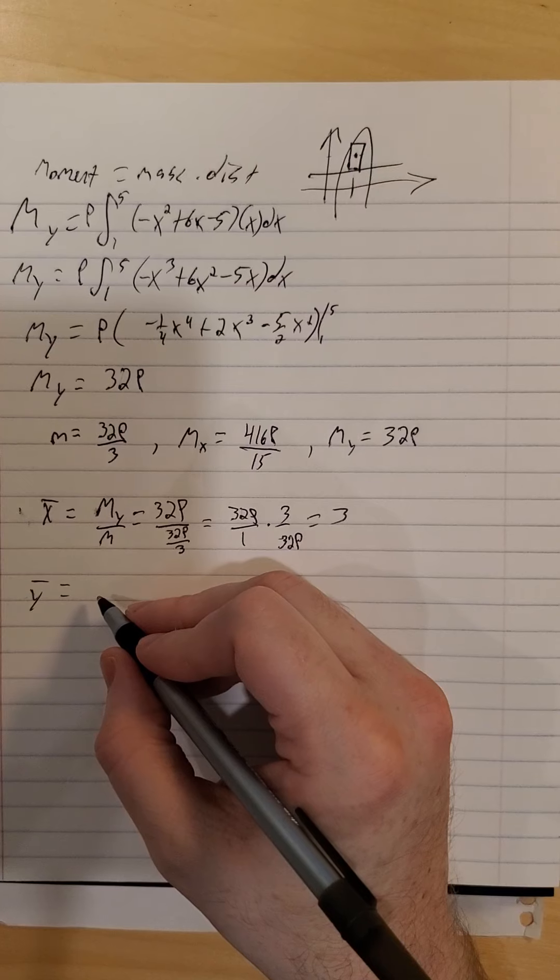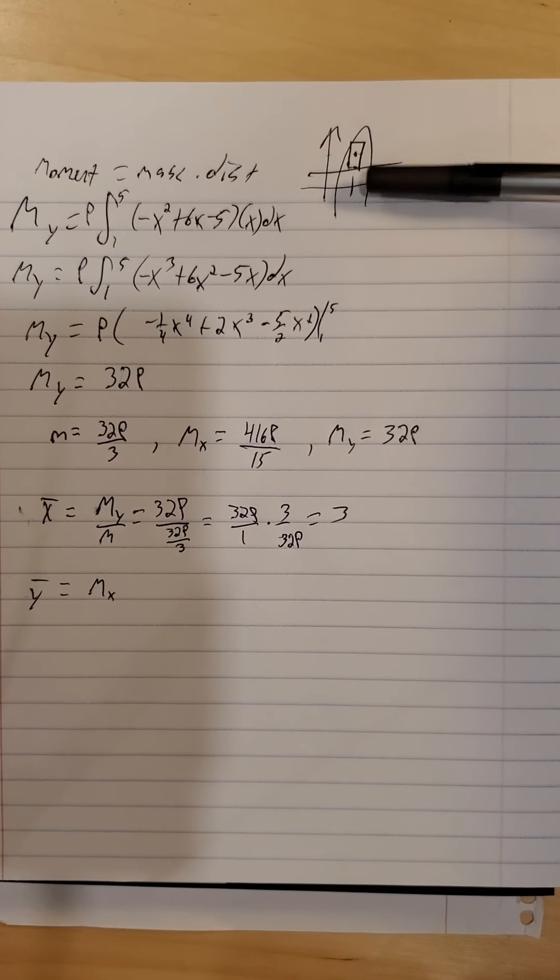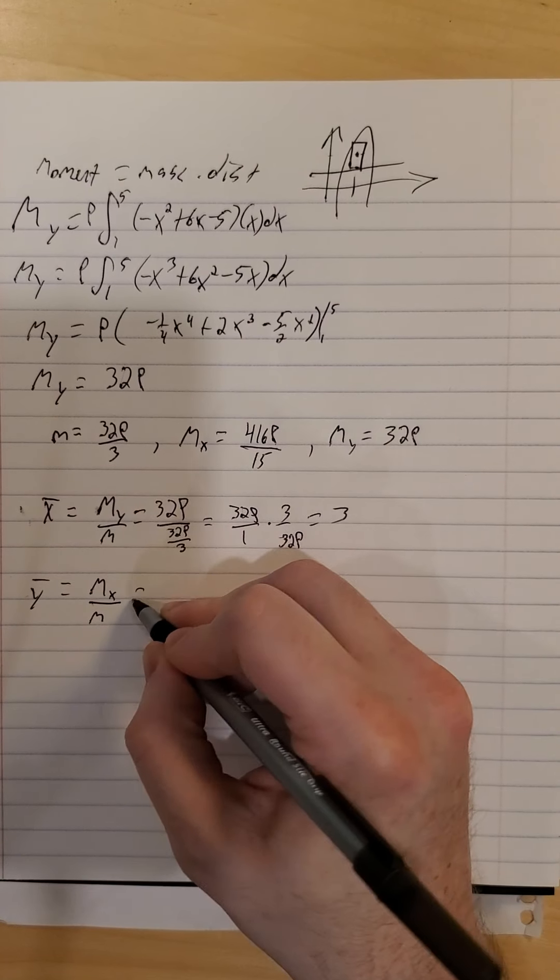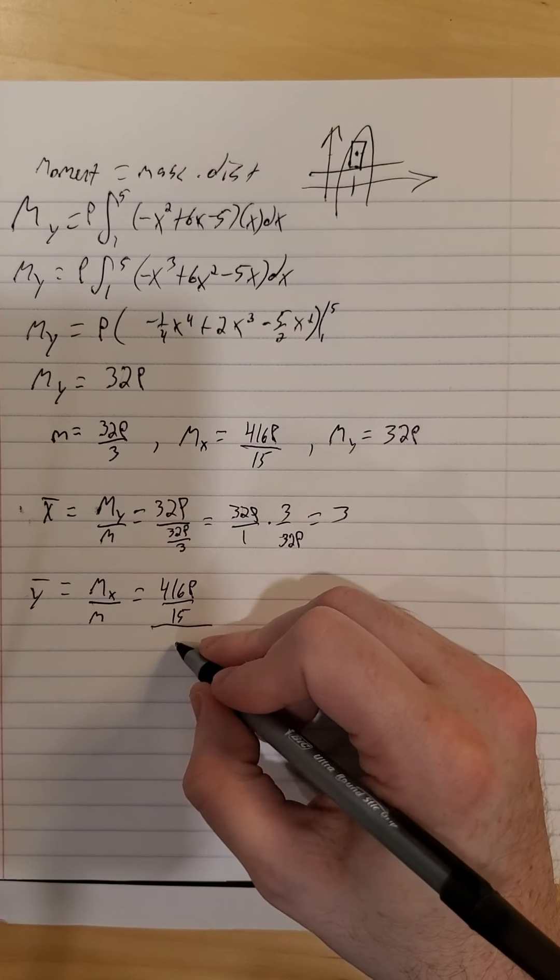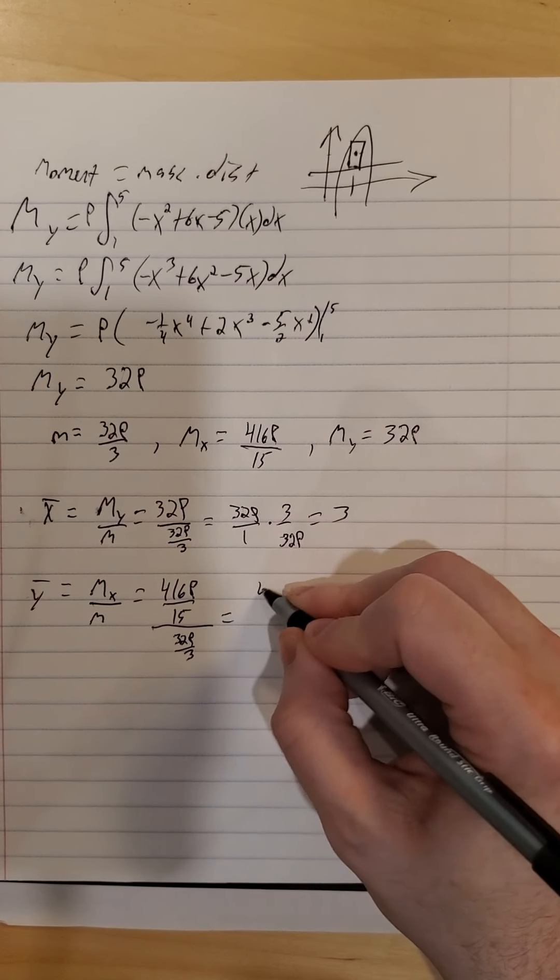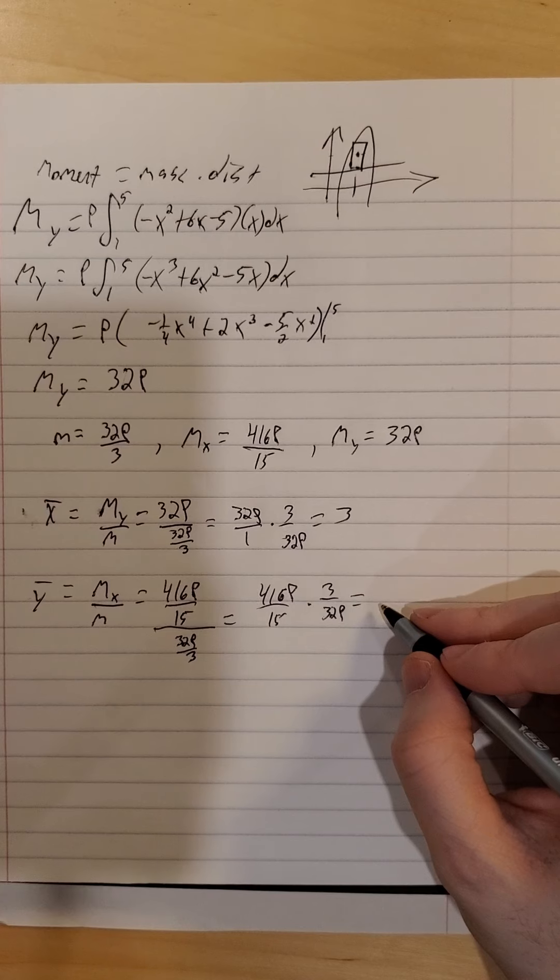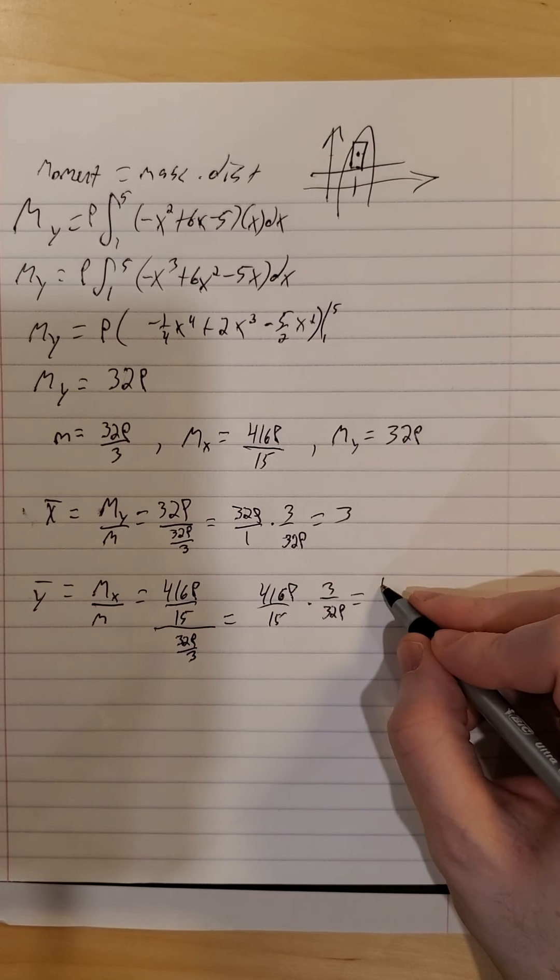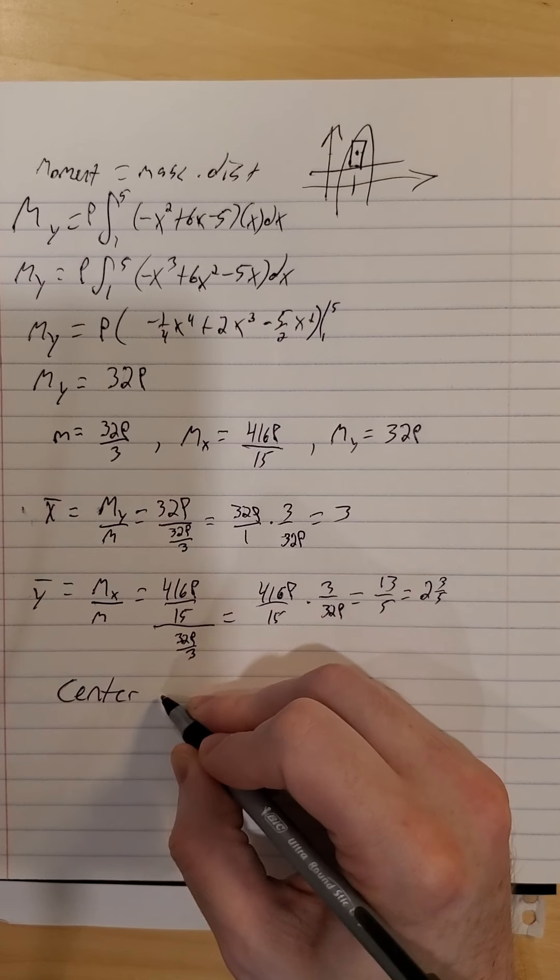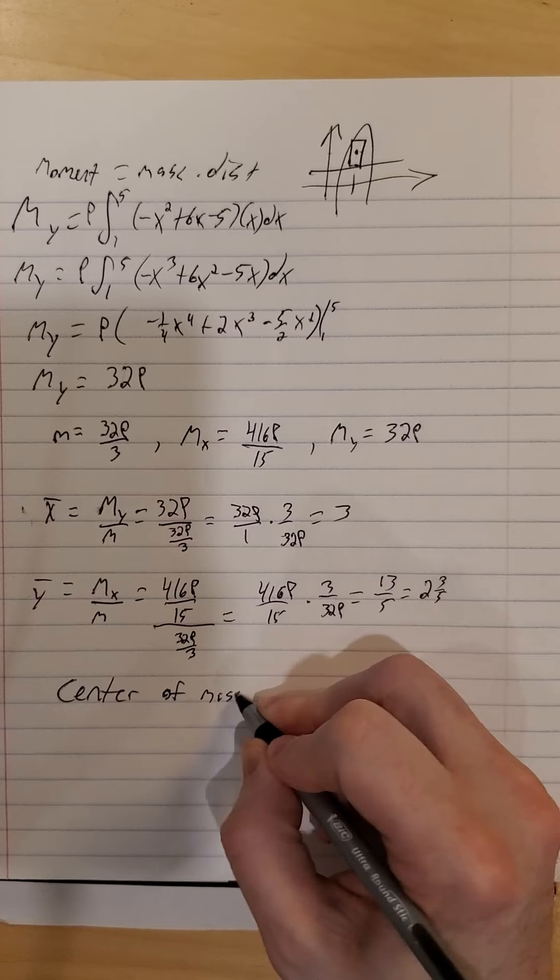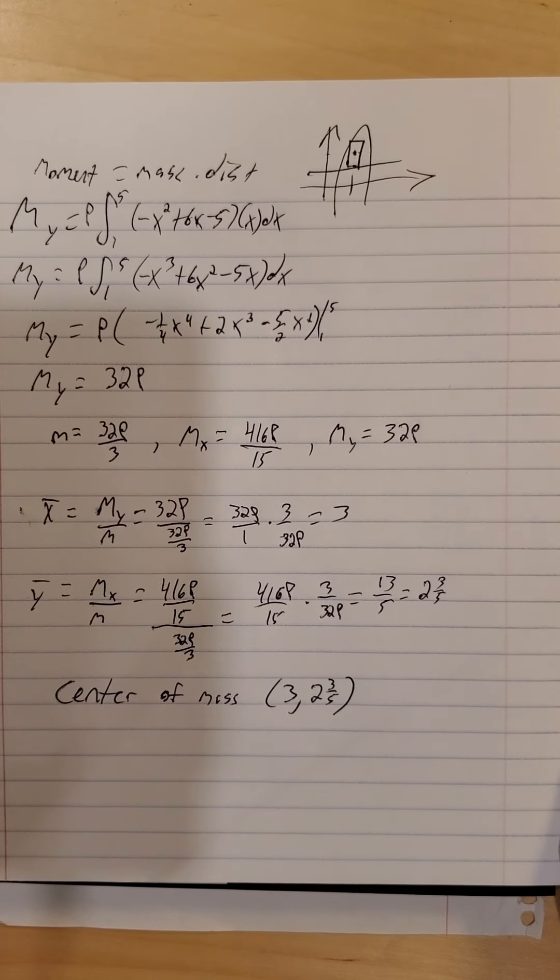y bar, that one was the more sort of challenging one to figure out. How far up or down to go? Again, up and down, I'm traveling away from the x-axis, so I need the one about x divided by the mass. So, 416 rho over 15 divided by mass. So, 416 rho over 15 times 3 over 32 rho. Notice the rhos drop out, and we end up at 13 fifths. Or 2 and 3 fifths. So, that is where our center of mass is for this shape. 3 for the x. 2 and 3 fifths for the y. Put a point there, and our shape will balance nice and pretty.